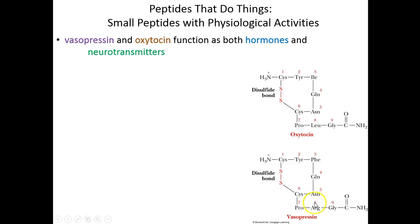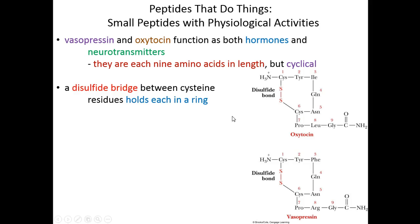Vasopressin is similarly structured—also nine amino acids long with a disulfide bridge. Oxytocin is a hormone which induces labor in pregnant women. In fact, when labor needs to be artificially induced, oxytocin is administered to the mother. It's also involved in lactation to get the milk flowing after the baby's born.